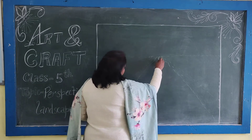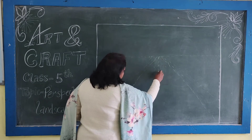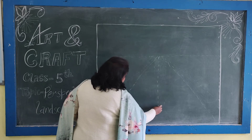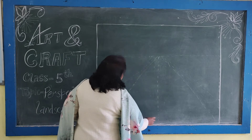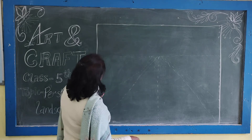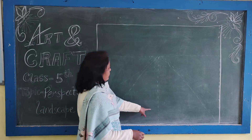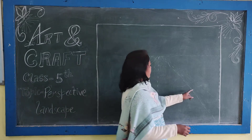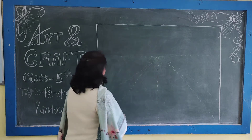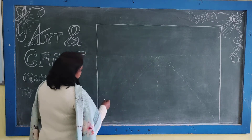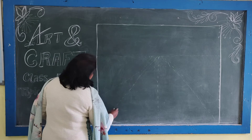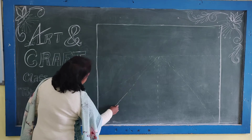Now draw one more perspective. This is the borderline. How many portions are here? One, two, three, four and five. Now draw the first swing. This is the borderline for using the portion.